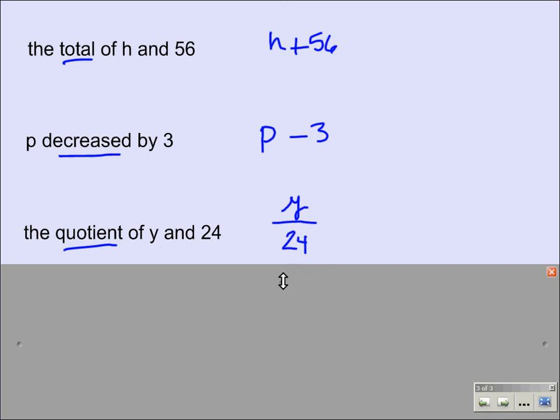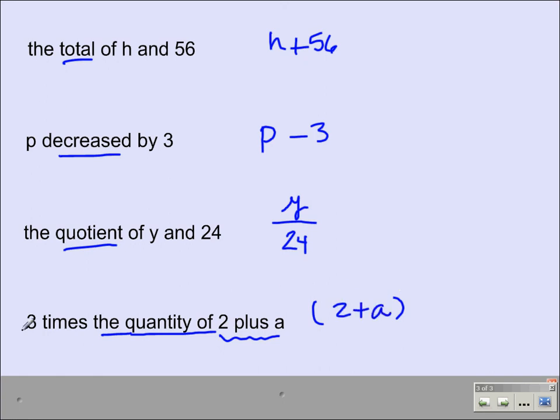In the last one, we're going to look at 3 times the quantity of 2 plus A. So we know the quantity of these words here represent parentheses. So if I want the quantity of 2 plus A, this is what's inside the parentheses. So I'll put that in there, 2 plus A. And I want 3 times that, so the 3 will go outside to represent the multiplication.